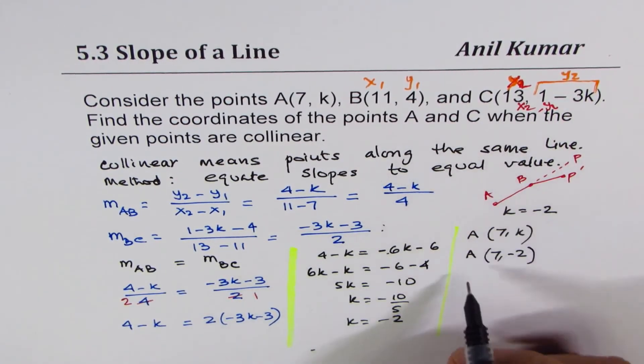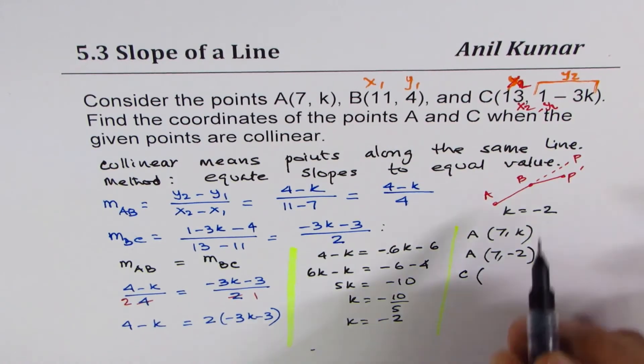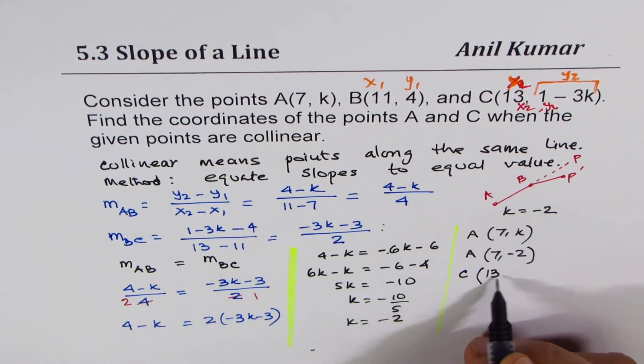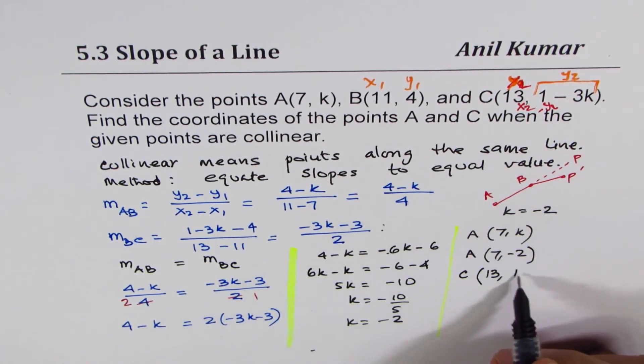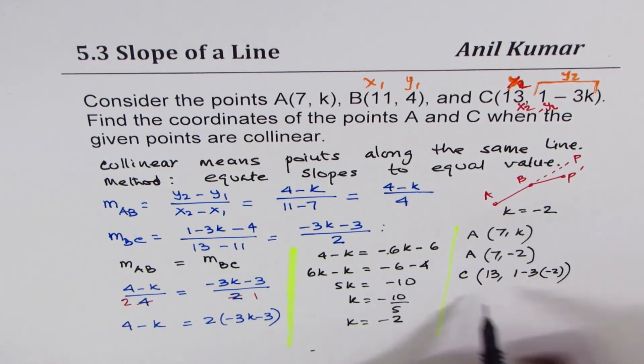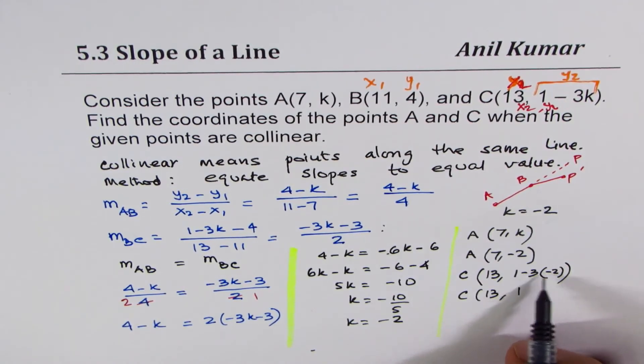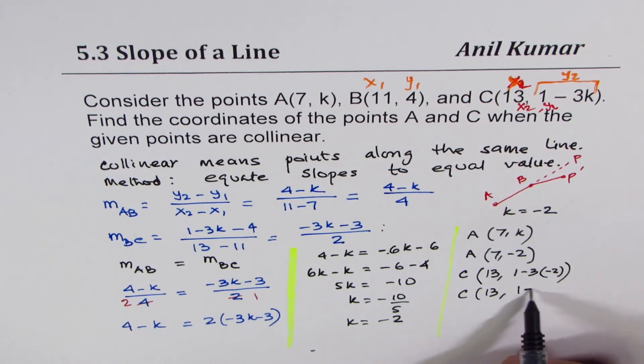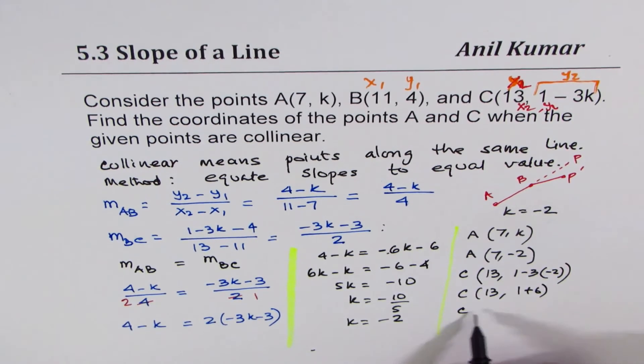To find point C, we are given 13 as X value. Y value is 1 minus 3 times minus 2. So C could be written as 13 times 1, minus minus becomes plus, so 1 plus 6, or you could write C as 13, 7.